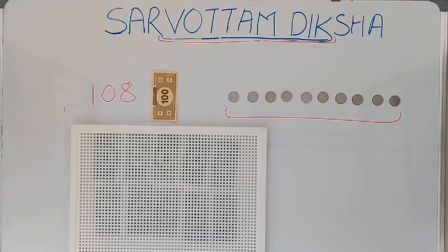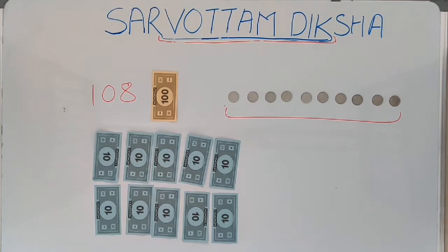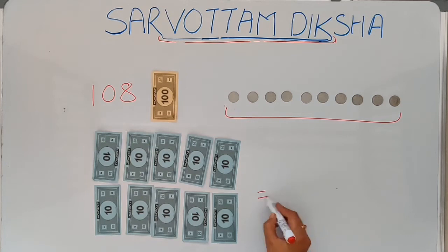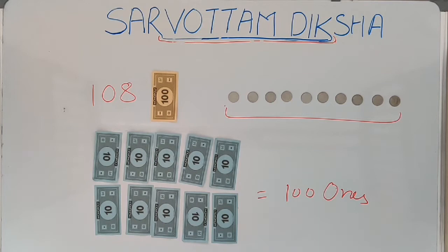Now let's see the number 108. What's the break up here? 1 hundred, 0 tens, and 8 ones. Exactly. And this 100, if you see, is nothing but 10 tens, which is equal to 100 ones. My each 10 corresponds to 10 ones, and corresponding to every 10, I have 100 ones.